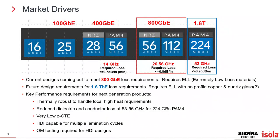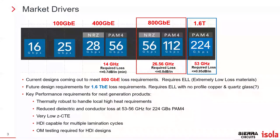Future design requirements will need an extremely low loss resin system, no-profile copper meaning no nodulation on the copper, and probably something like quartz glass or another type of reinforcement. You'll also need thermally robust products, reduced dielectric and conductor losses, very low CTE, and HDI capability because density continues to get finer. These products also have to go through OEM testing for HDI designs.